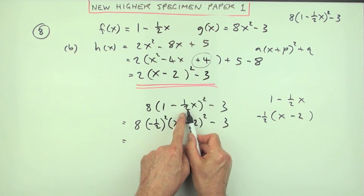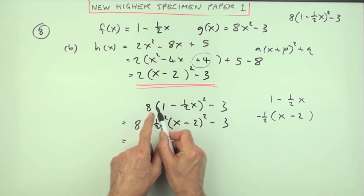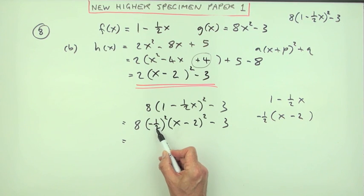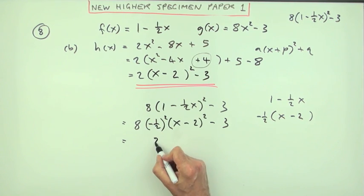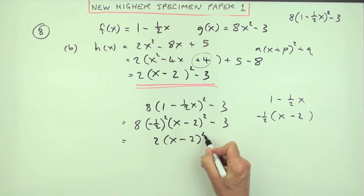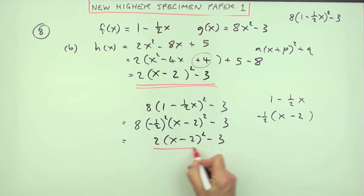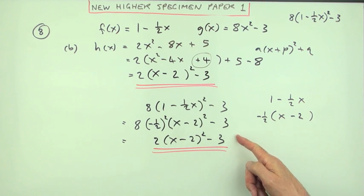So all I did was take out a factor of -½, but it was in the bracket, so when it comes out it'll be squared. Negative a half squared is a quarter. A quarter of 8 is 2. So it's 2 times (x - 2)² - 3. That's a wee bitty more sophisticated.